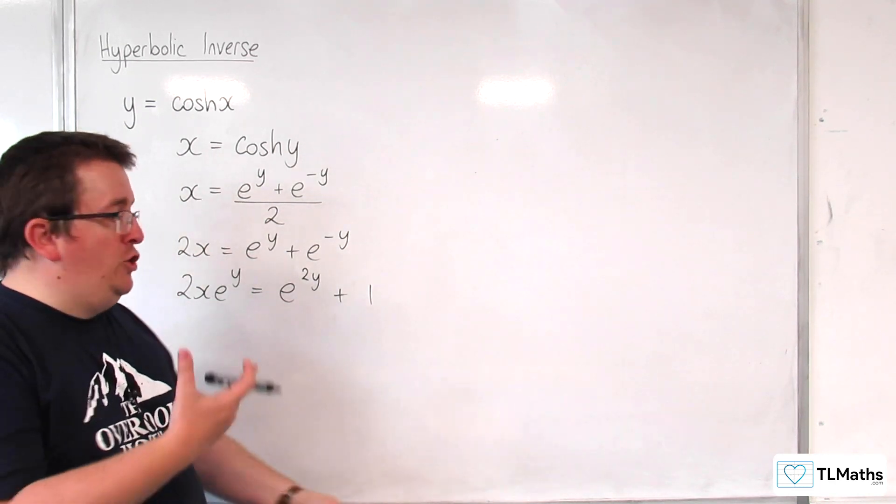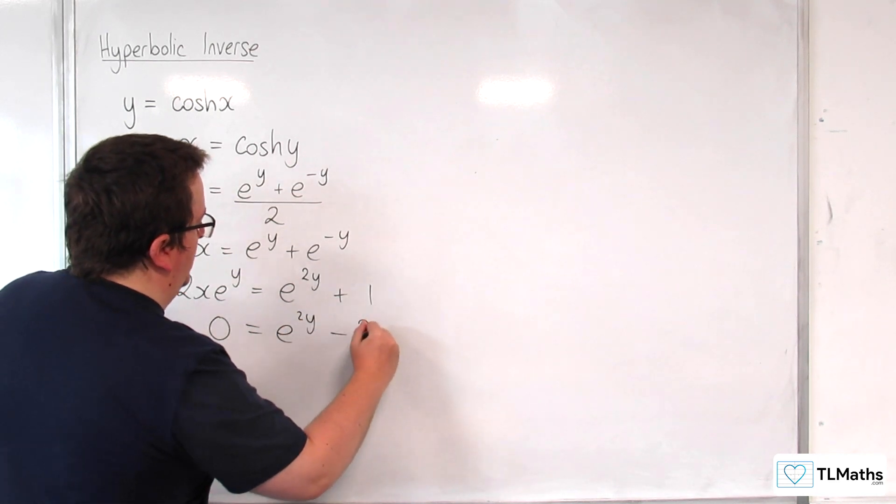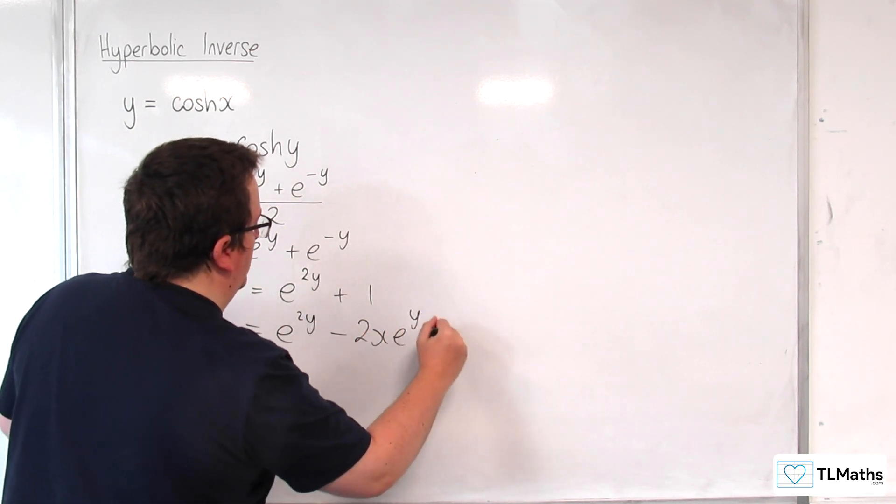And then I'm going to rearrange it to get everything on the right-hand side. So e to the 2y, take away 2x e to the y, plus 1.